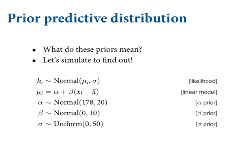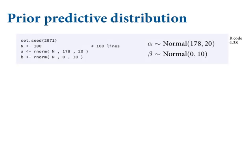Now we do prior predictive distributions again. We've got a new model with this new beta thing in it — and now it's predicting lines. So what the prior distribution contains now is a whole lot of lines. We're going to simulate lines from this prior and take a look at what the implications are, just like before.